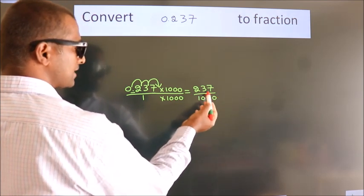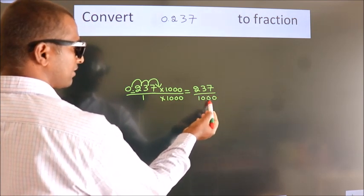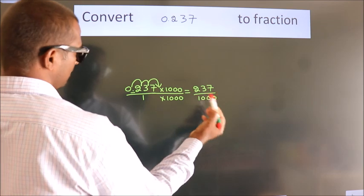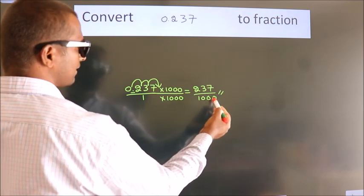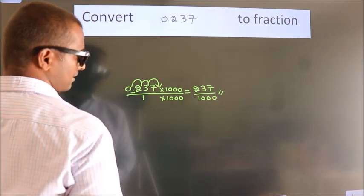This cannot be simplified any further. So 237/1000 is our fraction.